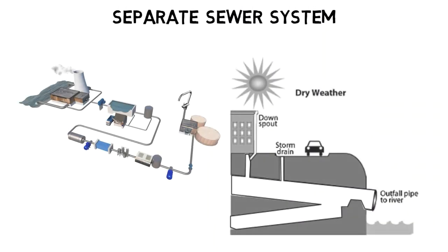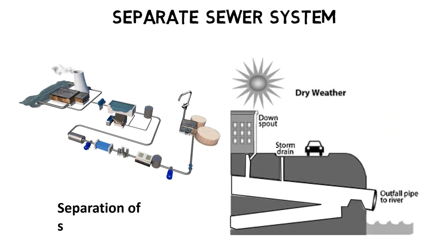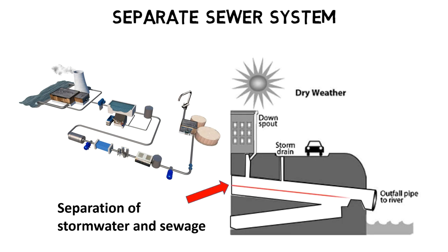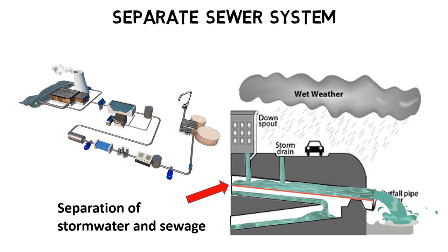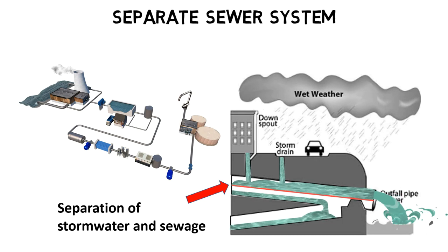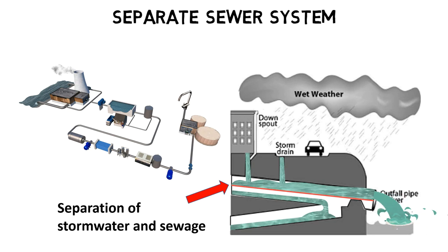Modern sewer systems separate sewage and stormwater flows in different pipes. Wastewater from private households and industries is directly connected to a treatment plant, whereas surface water runoff is directed to rivers and lakes.